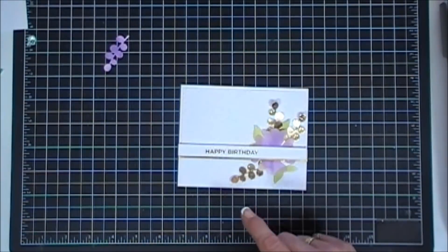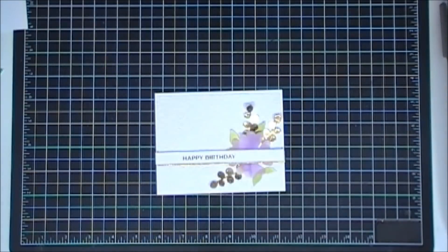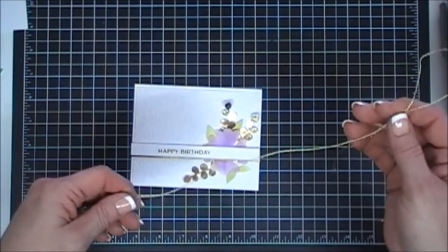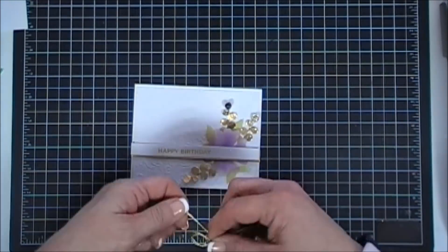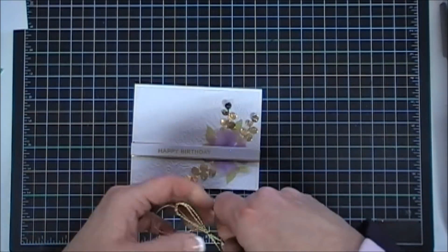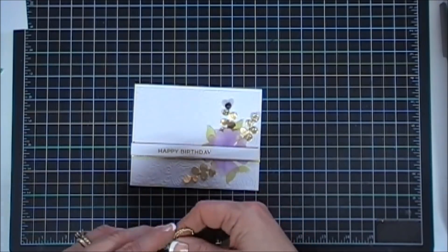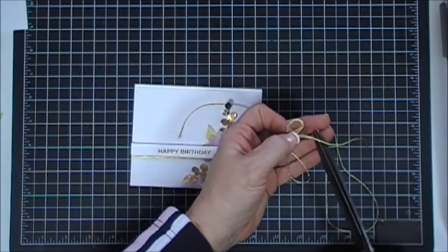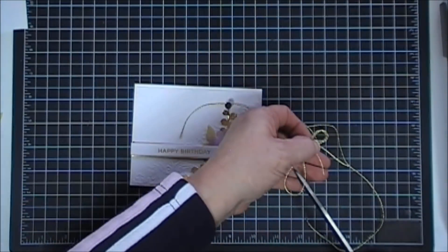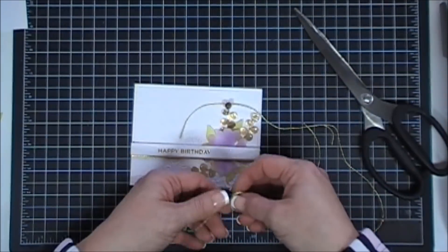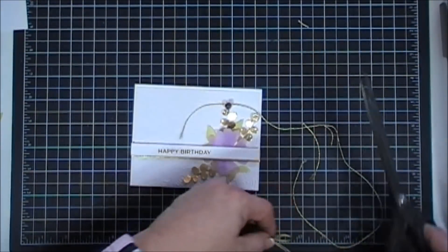Super pretty. Now I thought it needed a little more, so I'm bringing in some gold twine. I'm going to double it up and tie a bow. We'll just trim down the tails.